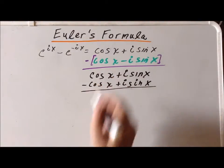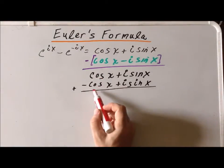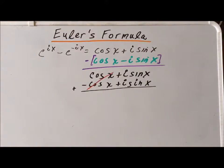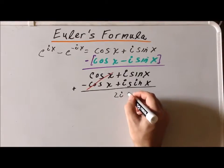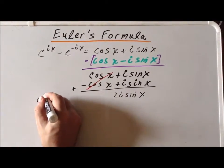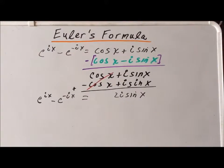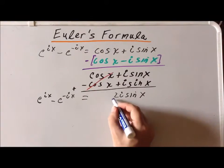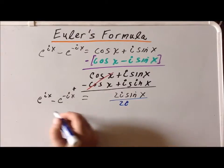Adding these together, the cosine x and minus cosine x cancel to zero, leaving the right-hand side as i times the sine of x plus i times the sine of x, which gives 2i times the sine of x. On the left-hand side we have e to the i x minus e to the minus i x equals 2i times the sine of x. We can now perform the same trick as before and divide both sides.